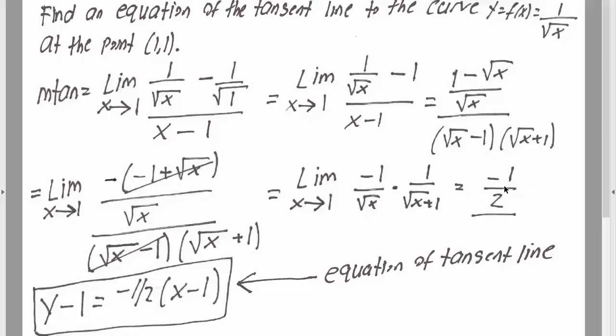And the slope of a line is simply y minus 1, the point, equals negative half, the slope, times x minus 1.